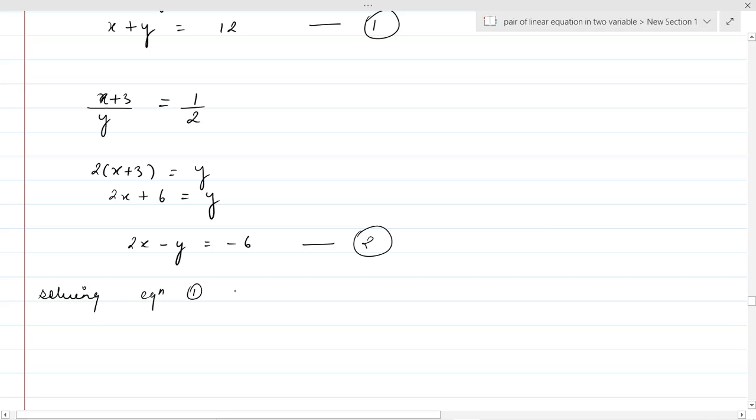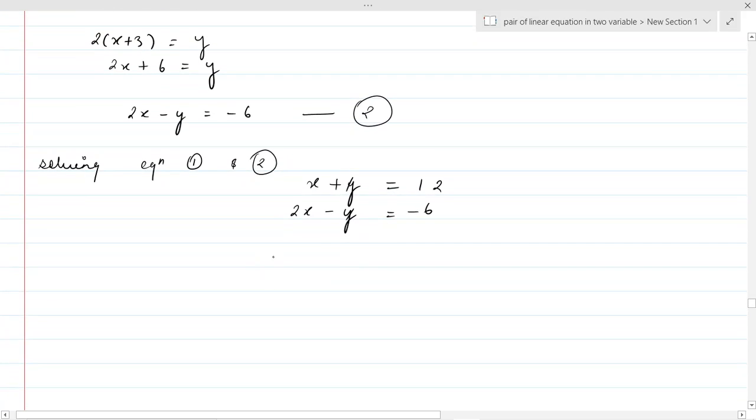Solving equation first and second. Equation first is x plus y equal to 12, equation second is 2x minus y equal to minus 6. Adding them, y cancels, we get 3x equal to 6, so x equal to 2.